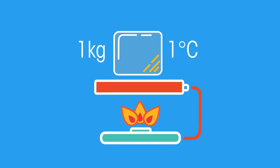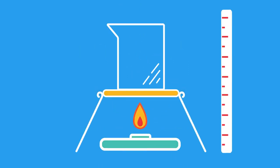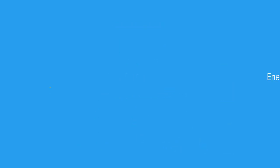So there you have it. To summarize, specific heat capacity is the amount of energy needed to raise 1 kilogram of a substance by 1 degree Celsius. It's helpful because it allows us to work out how much energy we need to heat up or cool down the substance to a desired temperature. To calculate it, use the following equation.